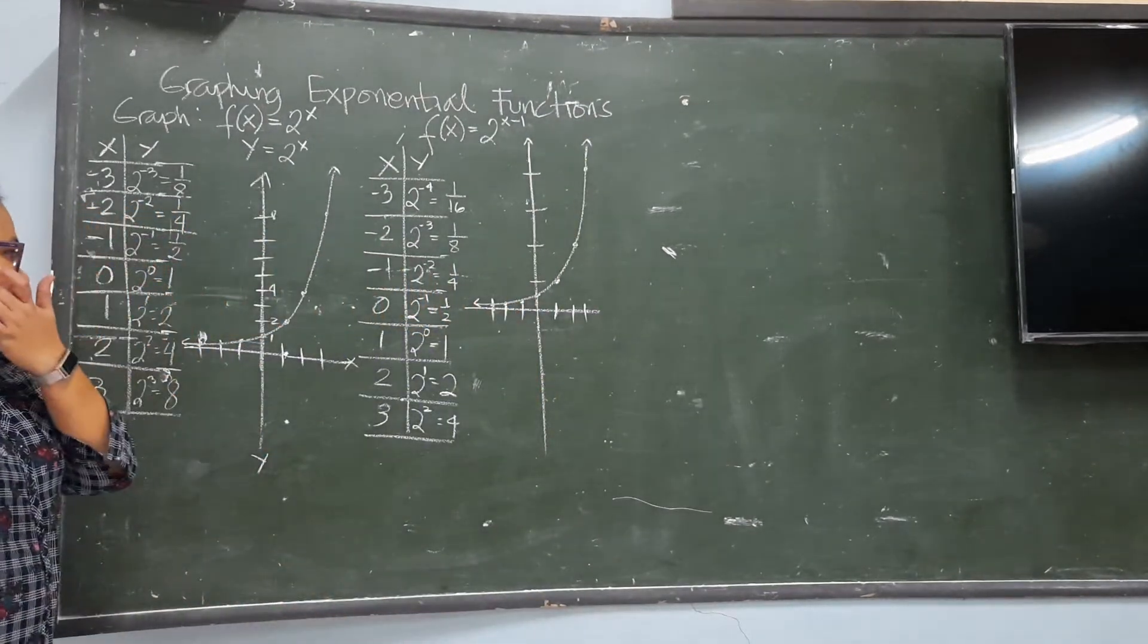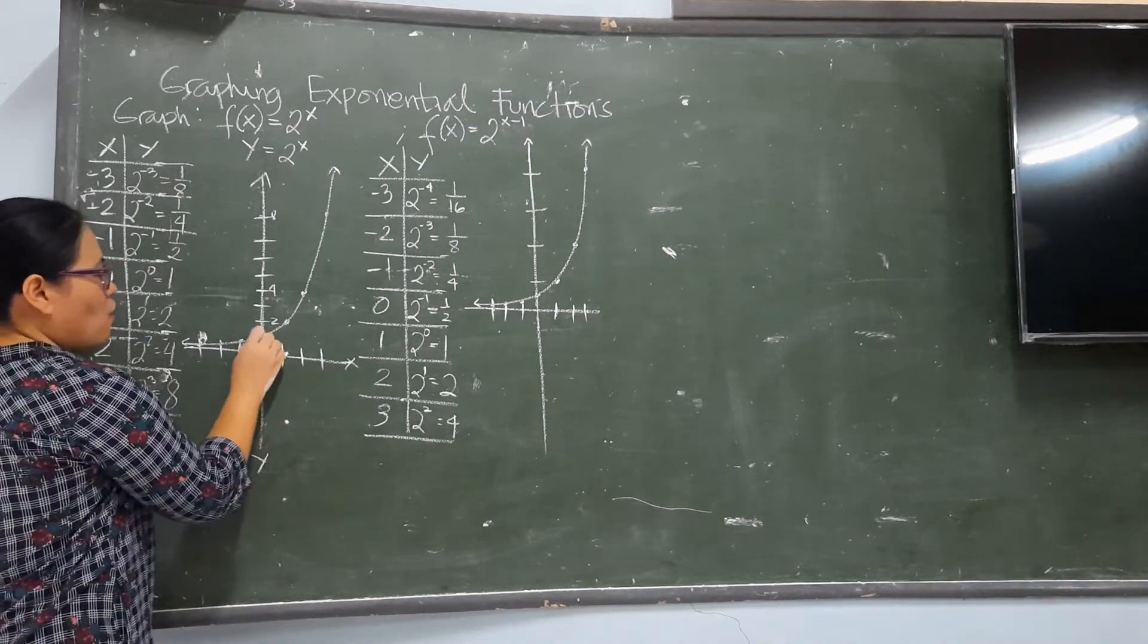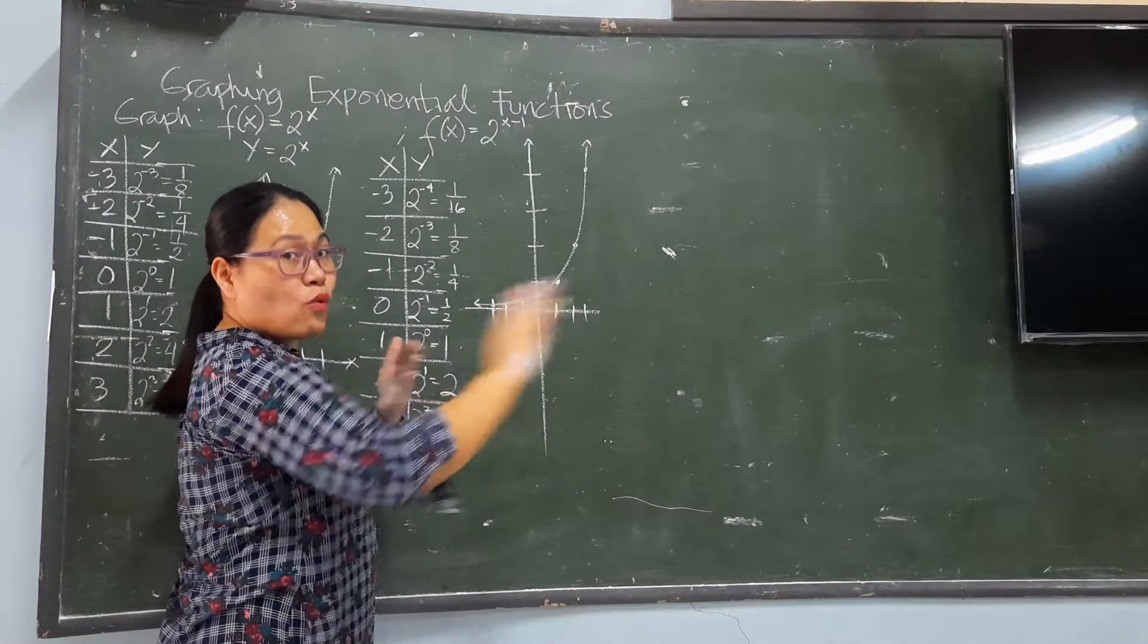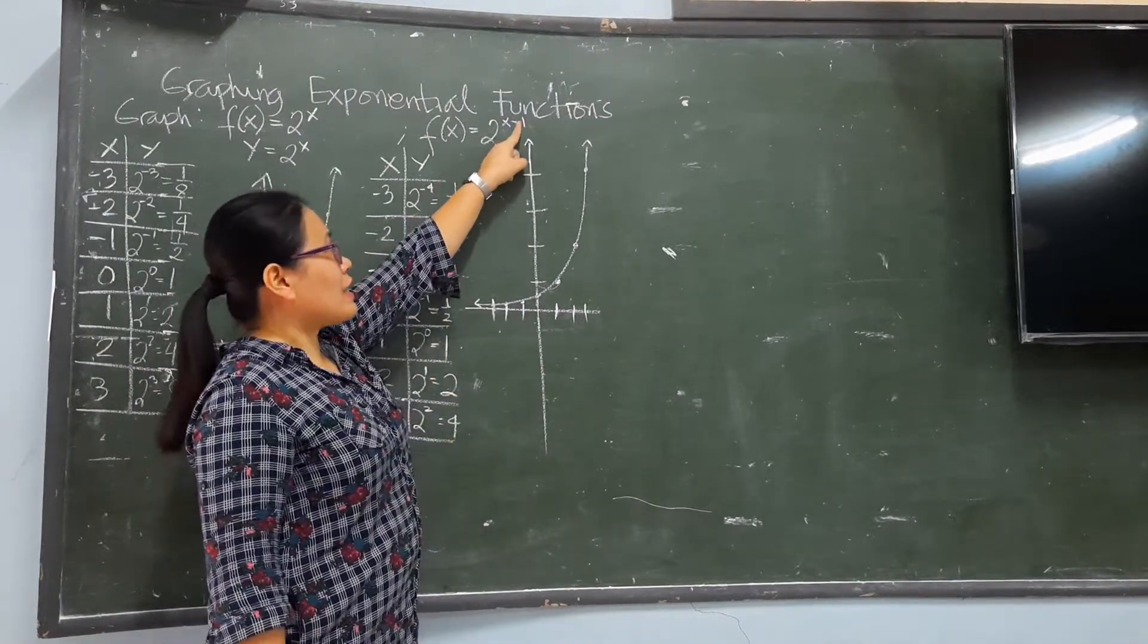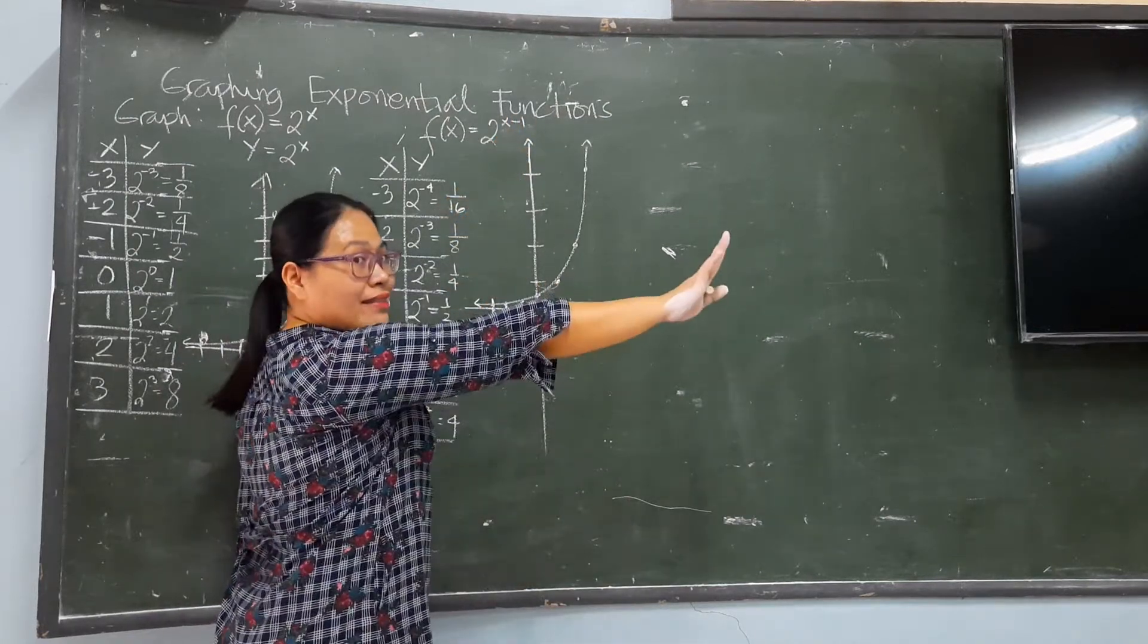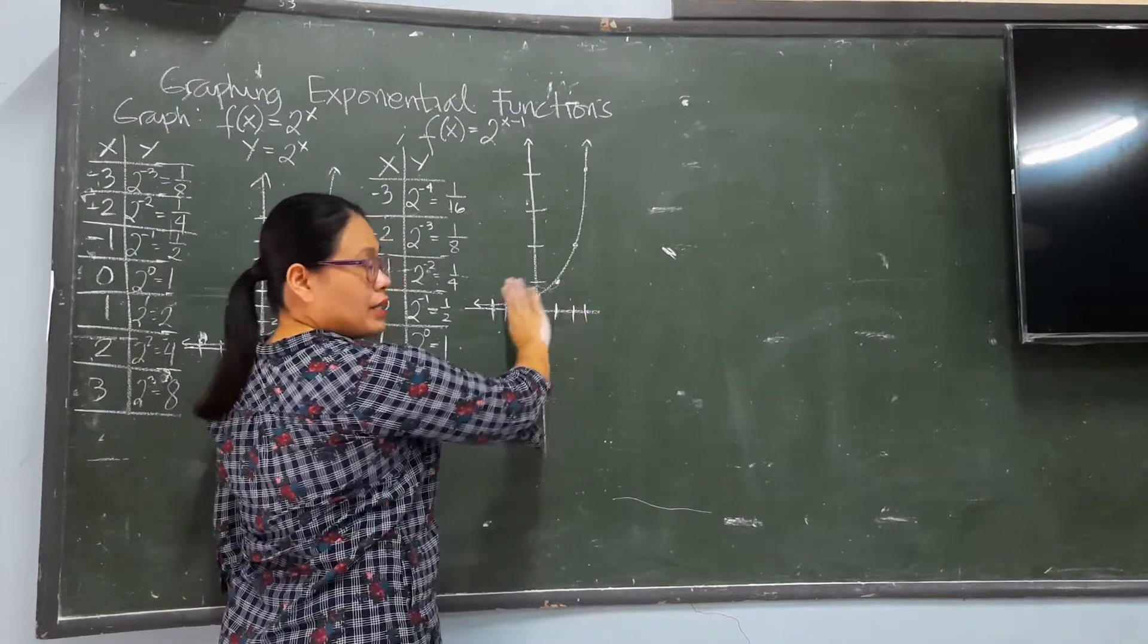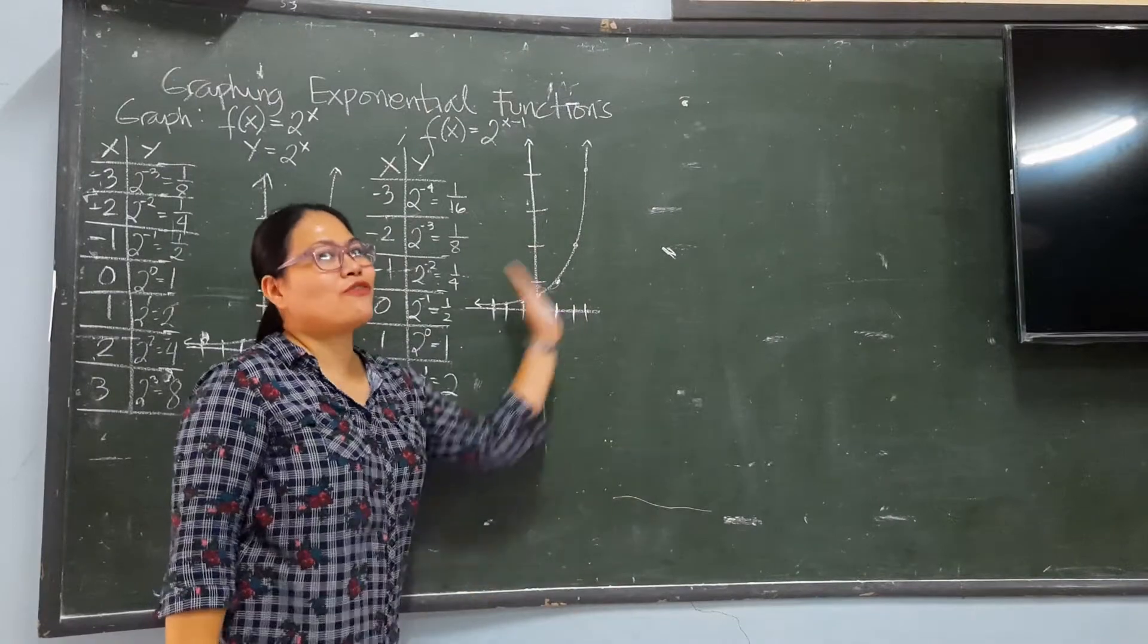If you've noticed it, that the graph, if you look at it, it's on the 0, 1, but this time, the 1 is shifted already 1 unit to the right. So, in other words, if it's minus, for example, minus 2, it becomes 2 units to the right. If it's plus, reverse. So, if it's negative, 2 units here, depending on what that number is, the graph will move over there.